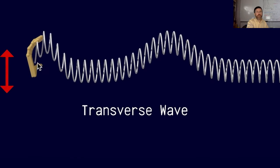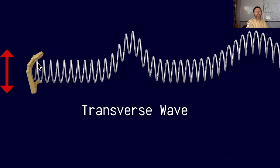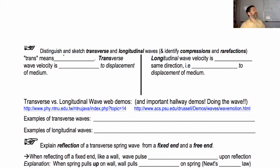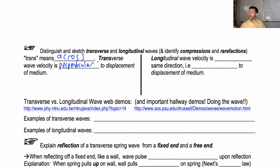This is why we call this type of wave a transverse wave. 'Trans' means across — just like a transcontinental railroad or a transatlantic flight. So transverse wave velocity is perpendicular — it's perpendicular to the displacement of the medium. If you're moving the medium up and down and the wave travels to the right, you've got a transverse wave.